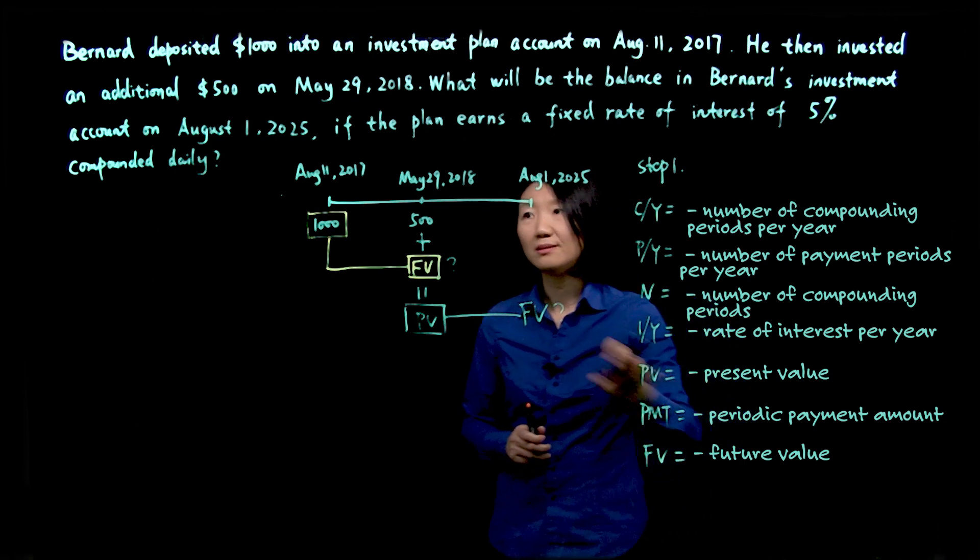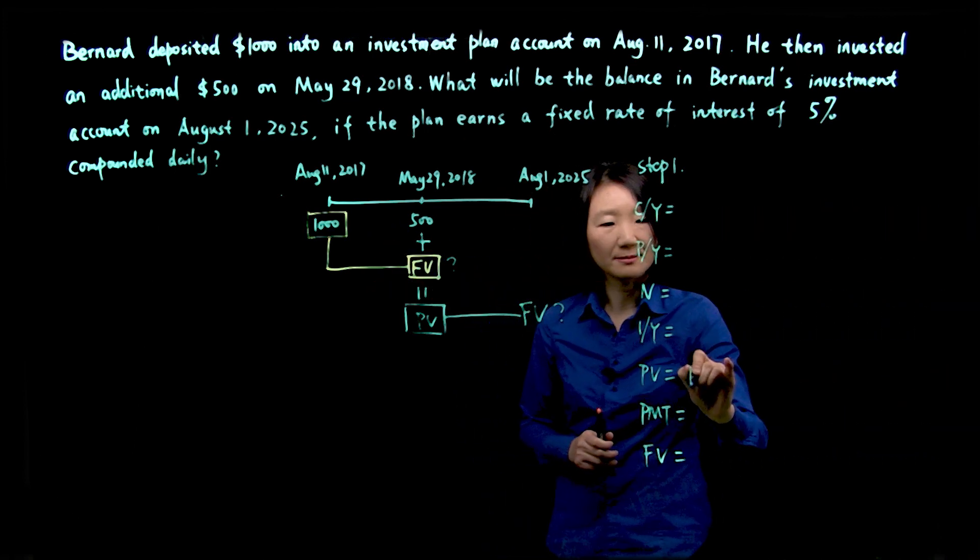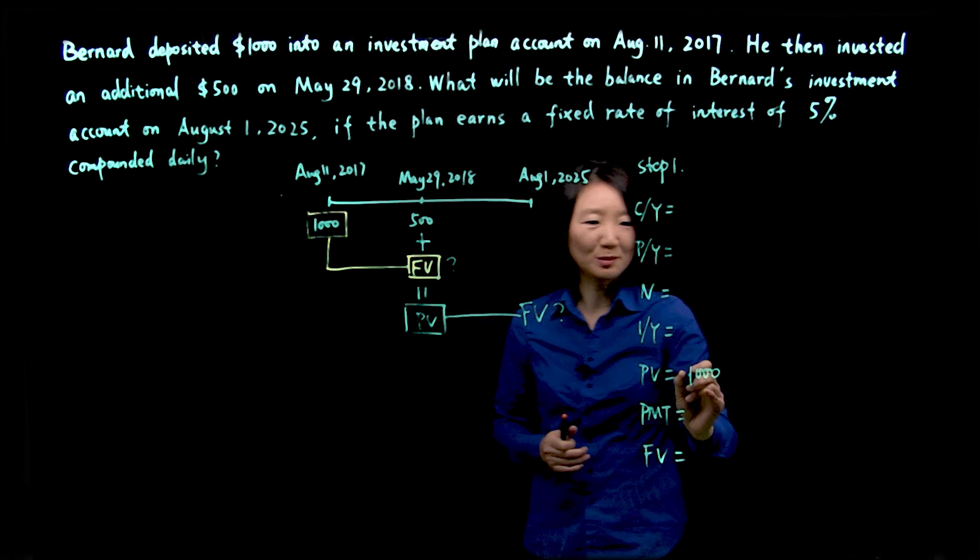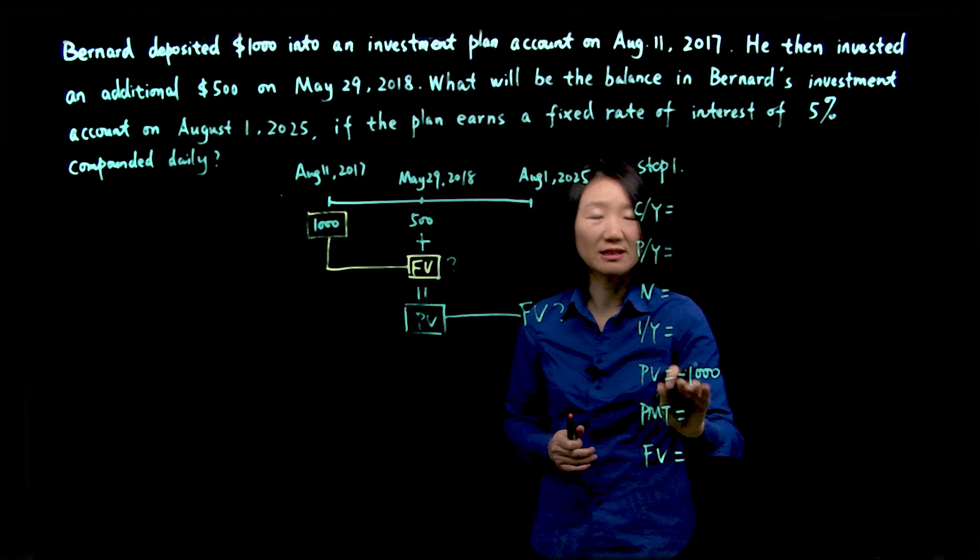So the present value, investment $1,000. Consider that's money leaving us, going to the bank to make the interest. We may use a negative sign there.